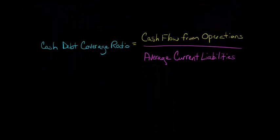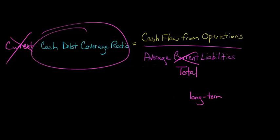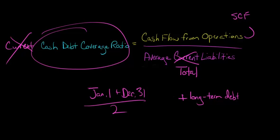When we look at the formula to compute the cash debt coverage ratio, we're going to have average total liabilities — not average current liabilities as we did with the current cash coverage ratio. Total liabilities is just long-term debt plus current liabilities. So we're looking at the cash flow from the firm's operations, which comes from the statement of cash flows as the net cash provided by the firm's core operations, divided by the average total liabilities — for example, total liabilities as of January 1 plus total liabilities as of December 31, divided by 2.